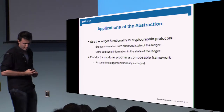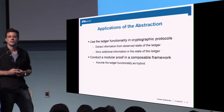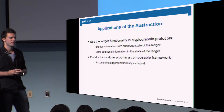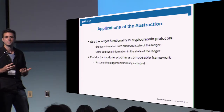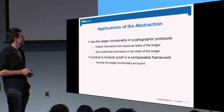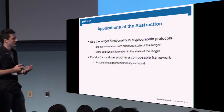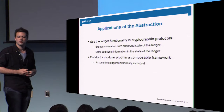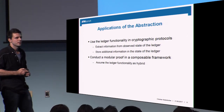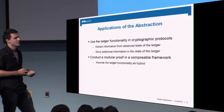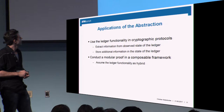Why do we want such a functionality? It's nice to assume it so that you can design an application around it, and then assume these ideal properties to conclude the security of your application. It's also nice to have such a functionality because you can work in a composable framework and assume this as a hybrid functionality and use it.